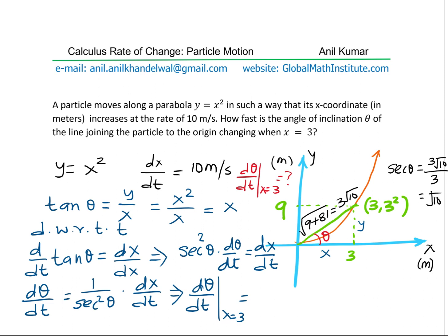So that is the value of secant theta. Now here, we can substitute this value for secant theta and dx dt and get the value for d theta over dt.